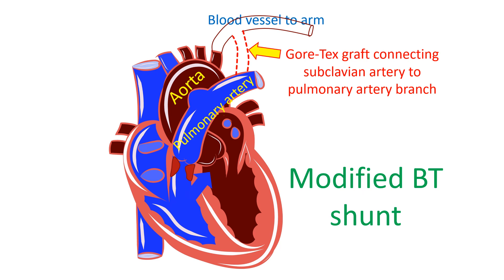In the original BT shunt, a branch of the aorta known as the subclavian artery, which takes blood to the arm, is used to take blood to the pulmonary artery. This can reduce the blood supply to the arm. In the modified BT shunt, an extra tube known as a Gore-Tex graft is used to connect the subclavian artery to the pulmonary artery. This takes only a part of the blood going to the arm, and hence the blood pressure in the lungs does not go very high. Moreover, the blood flow to the arm is also preserved to some extent. Classical BT shunt has been abandoned and only modified BT shunts are being done now.